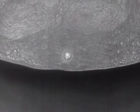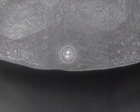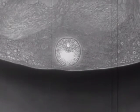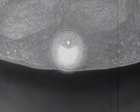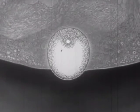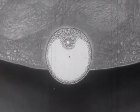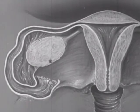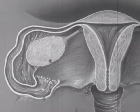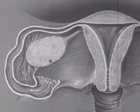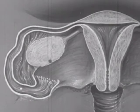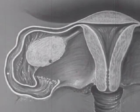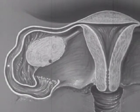Remember that while this one egg is growing, all the others are growing also, but usually only one egg reaches maturity every 28 days. After reaching full development, it breaks through the ovarian wall and passes into the fallopian tube. This breaking through of the egg is called ovulation.